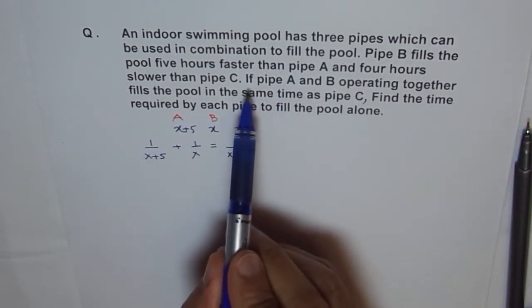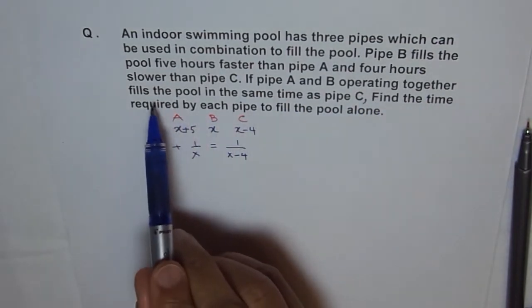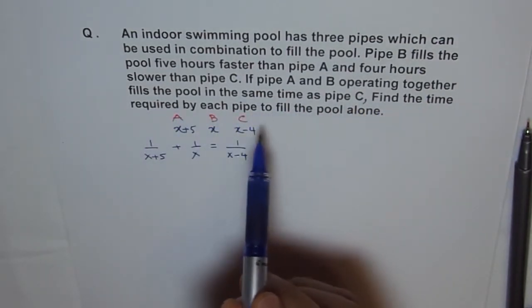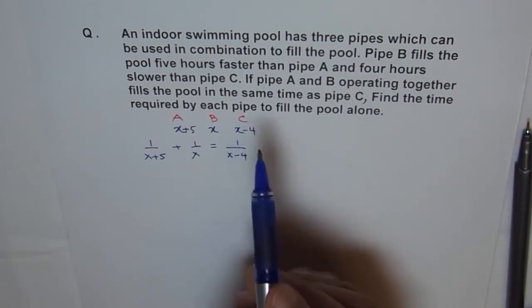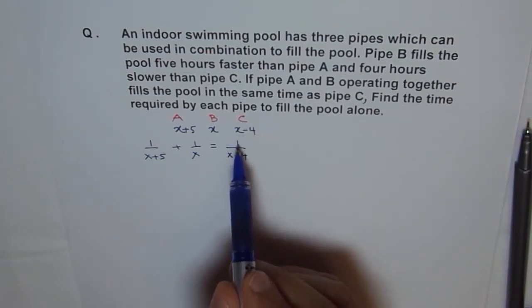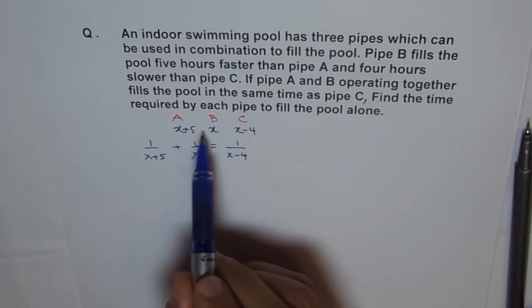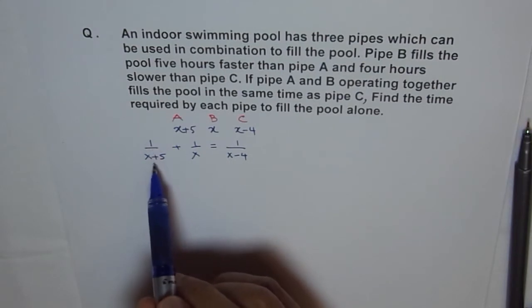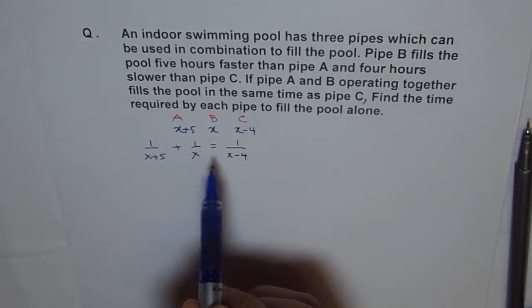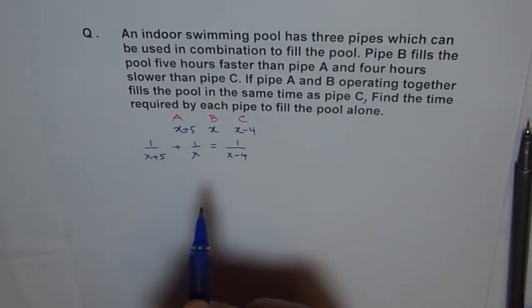To see it clearly: in one hour, pipe C fills one over X minus four of the pool. In one hour, pipes A and B fill one over X plus five and one over X respectively. Added together, the combined rate of A and B equals the rate of C.